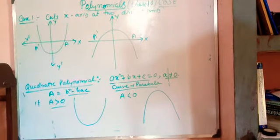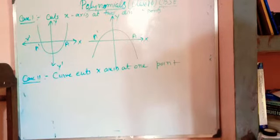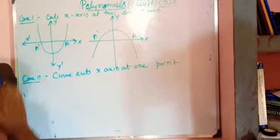The x-axis is cut at two distinct points. Next, case two: cuts x-axis at one distinct point. These cases are all for quadratic equations.